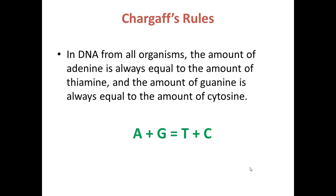One of the first major findings that helped to elucidate the structure of DNA came from Chargaff in 1949. He found that in DNA from any organism the amount of A was always equal to the amount of T, and the amount of G was always equal to the amount of C. Although the base composition varied between species, the amount of the purines A and G was always equal to the amount of the pyrimidines T and C. These became known as Chargaff's rules.